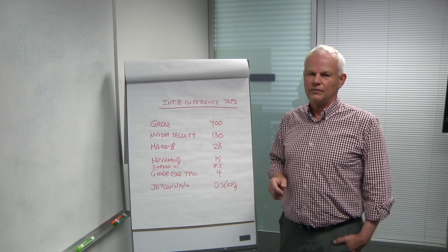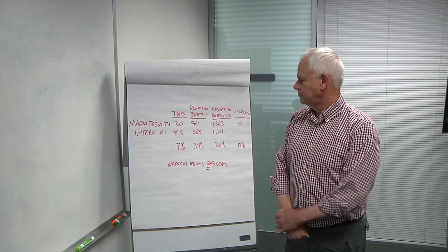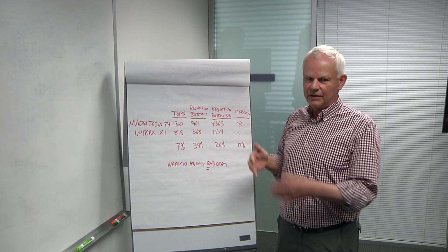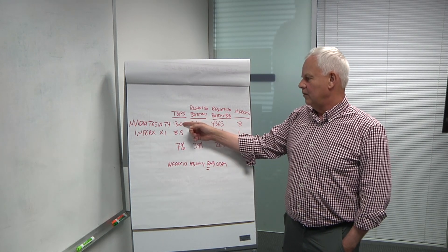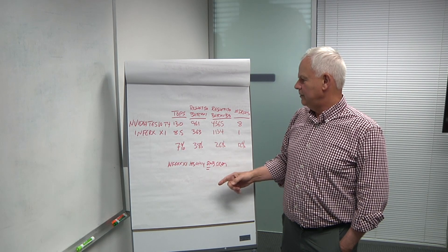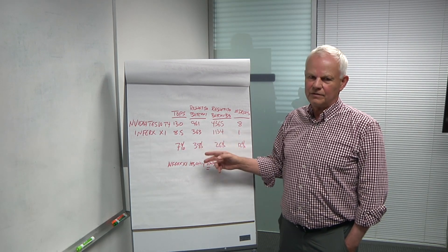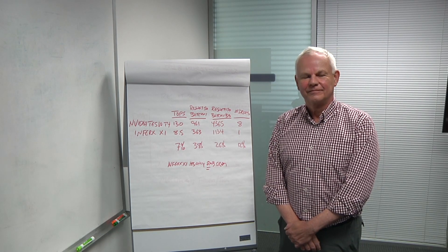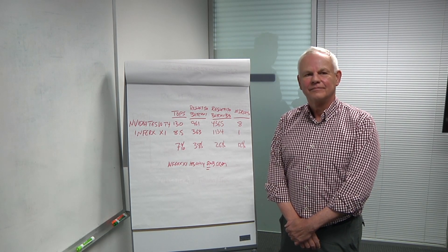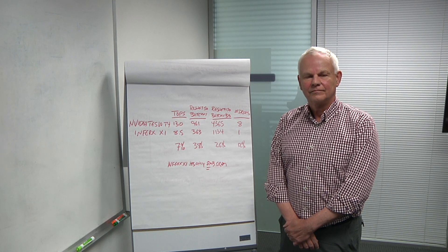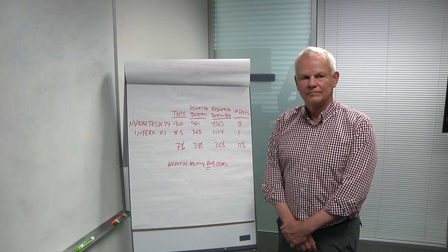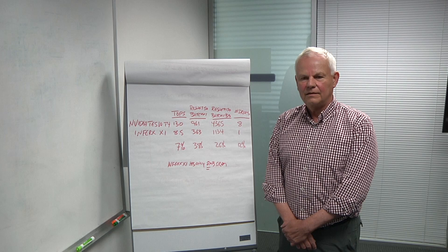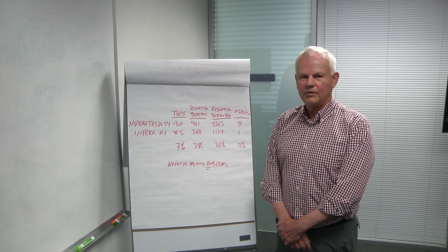So does TOPS, is that a good indicator of throughput? We're looking at two chips rather than try to compare everything. And we can show that a chip with 130 TOPS and a chip with 8.5 TOPS are much closer in throughput than the TOPS would indicate. So one is much more efficient.